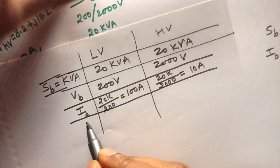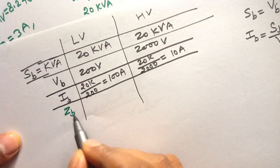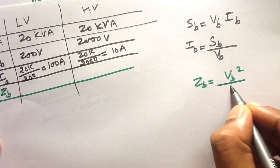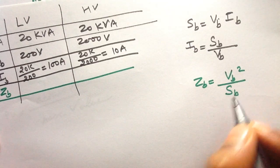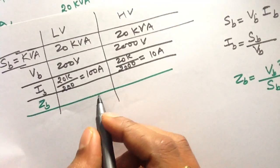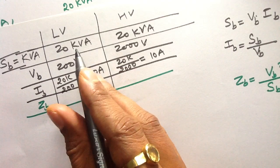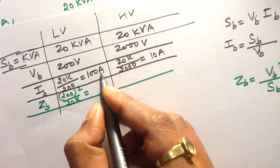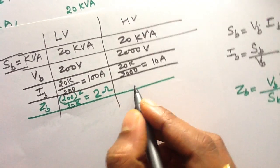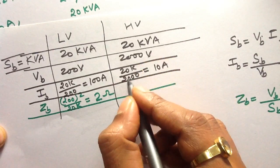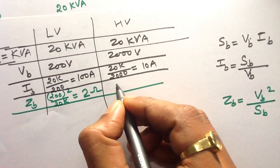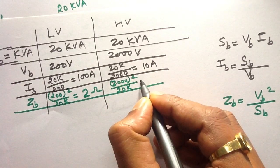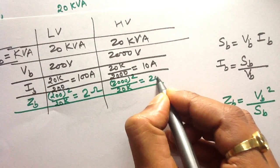The base impedance equals base voltage squared divided by the base power. For LV side, the base voltage is 200, so 200 squared divided by 20K gives a base impedance of 2 Ohm. The base impedance of HV side equals 2000 squared divided by 20K, which gives 200 Ohms.